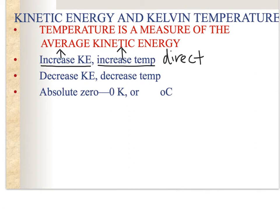It's the opposite if you decrease kinetic energy — particles slow down, resulting in a decrease in temperature. If you're cooling something down, the particles slow down and have fewer collisions. This is only a true direct relationship if your temperature is in Kelvin.